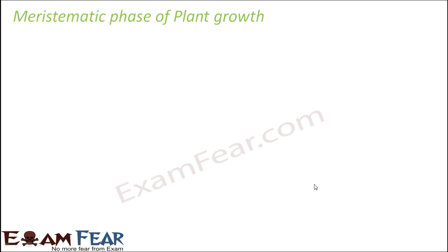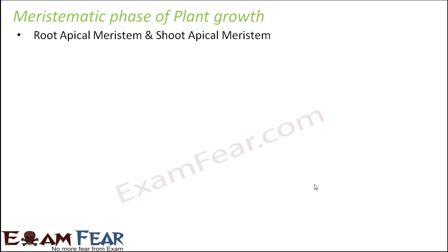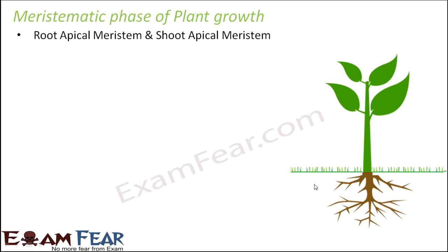What is the meristematic phase of plant growth? The word meristematic comes from dividing — so this is the phase where the cell divides. Root apical meristem and shoot apical meristem together perform the main role in this phase. These two apical meristems are mostly involved in dividing and forming new cells. The meristematic phase occurs in the tip region, which represents the meristematic zone.